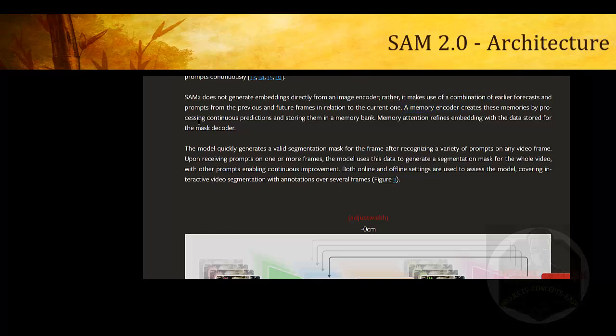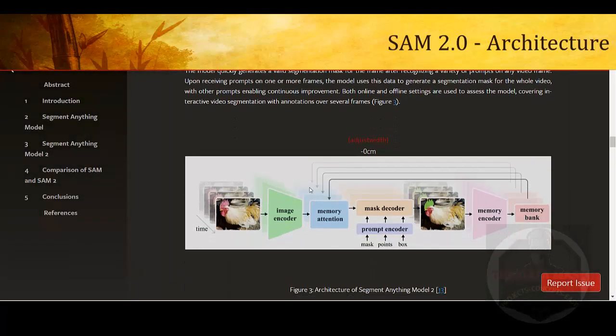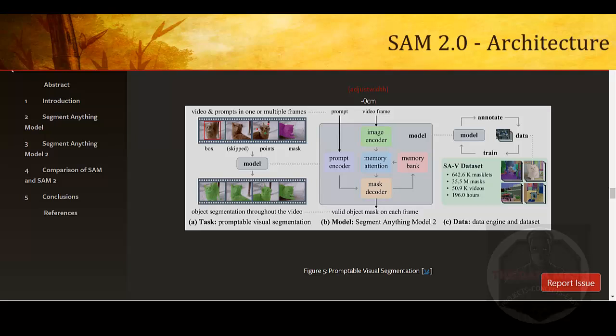This memory bank acts as a memory attention mechanism. The memory encoder creates this memory by processing continuous predictions and storing them into the memory bank. The memory attention refines embeddings with the data stored for the memory decoder.